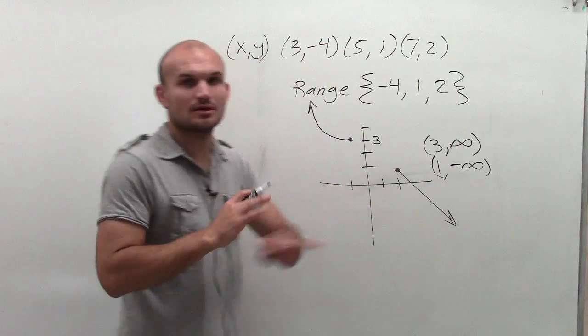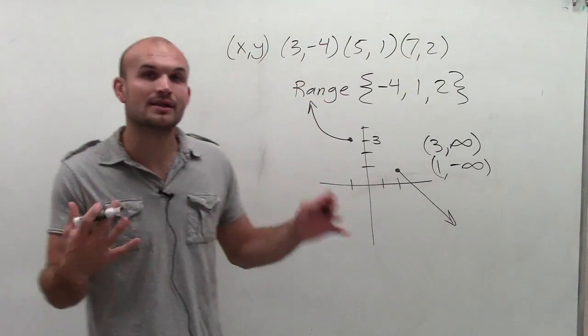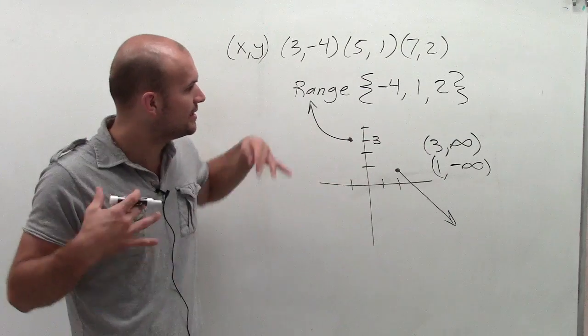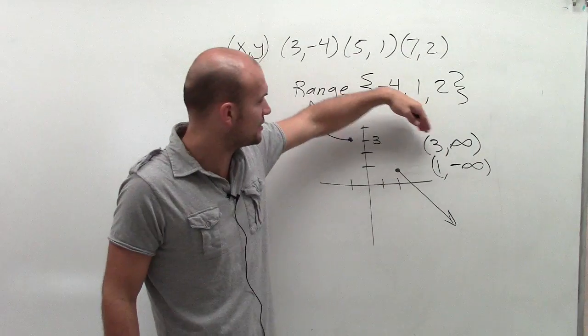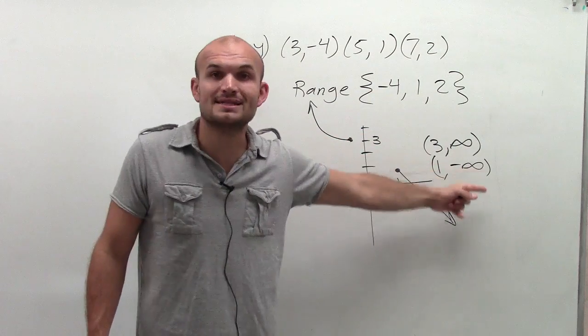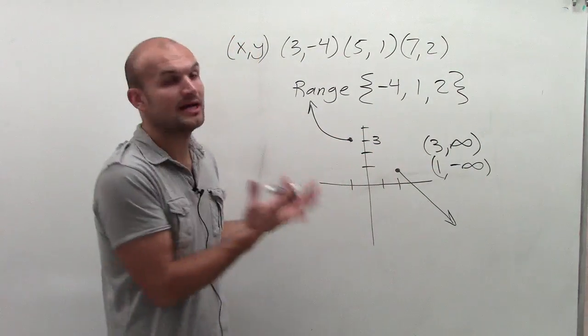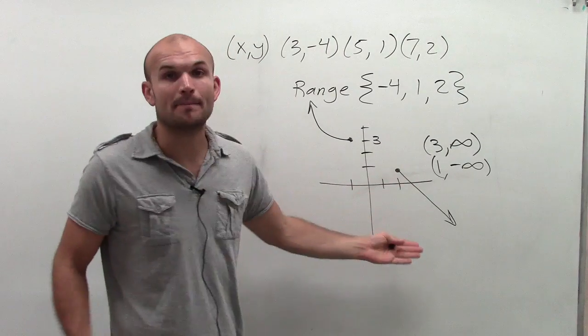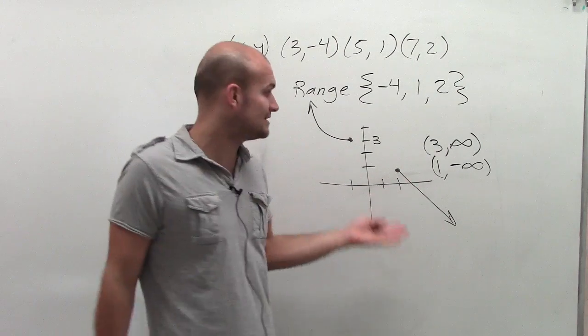And we'll talk about how to actually write that out in later terms. But if you can understand that your range is going to be from 3 to infinity, and it's also going to be from 1 to negative infinity, that's going to be all the y values that make up this graph, or that are going to make this relation.